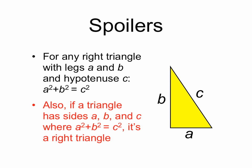Also, it turns out that if a triangle has sides of length a, b, and c where you can relate these lengths with the equation a squared plus b squared equals c squared, that has to be a right triangle. But we're just going to prove the first claim here.